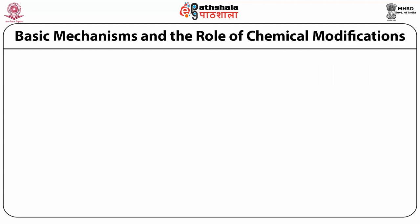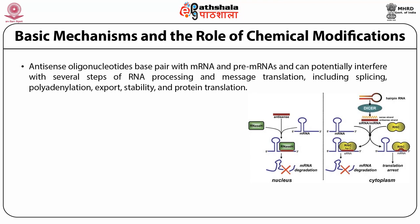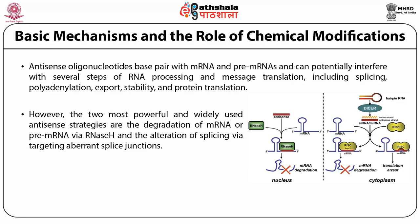The basic mechanism and role of chemical modifications: antisense oligonucleotides base pair with mRNA and pre-mRNAs and can potentially interfere with several steps of RNA processing and message translation, including splicing, polyadenylation, export, stability, and translation. However, the two most powerful and widely used antisense strategies are the degradation of mRNA and pre-mRNA via RNase H, and the alteration of splicing by antisense oligonucleotides targeting aberrant splice junctions.